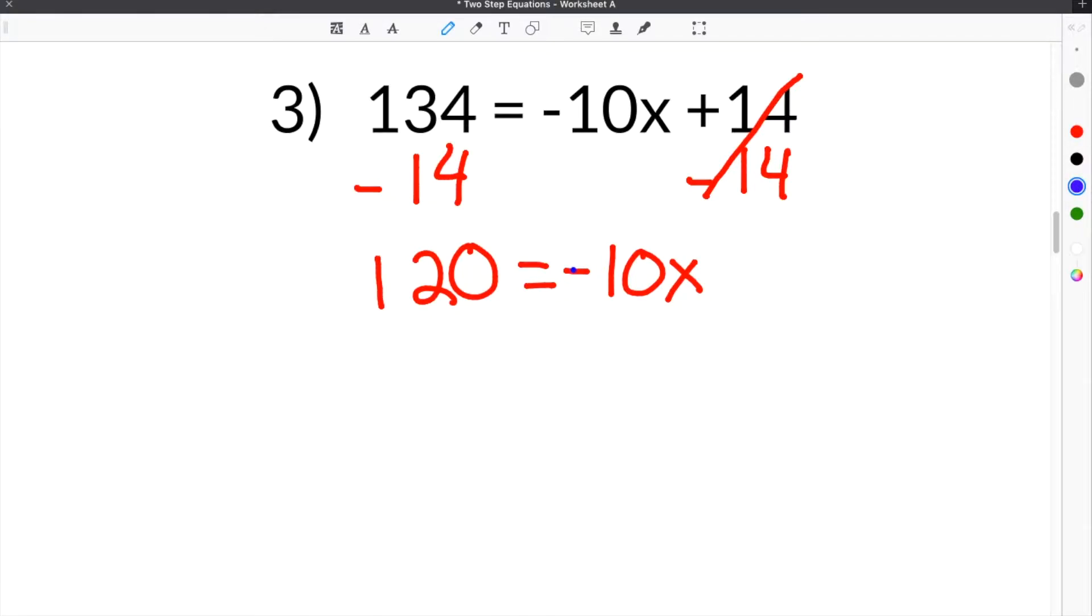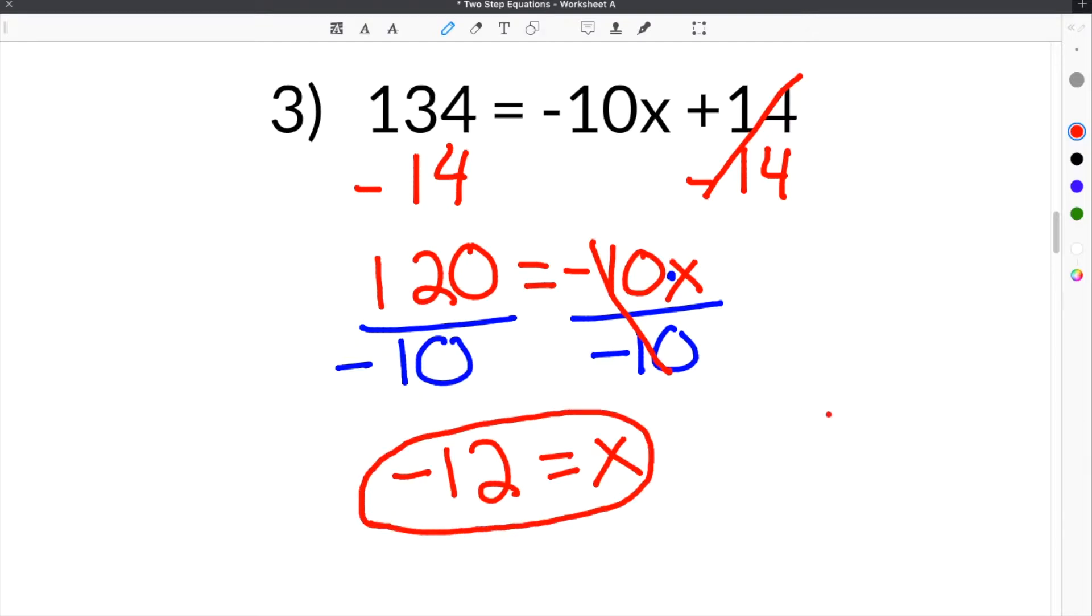This is like saying negative 10 times x, or the coefficient on x would be negative 10, so it's like negative 10 times x. You have to divide this by negative 10, because the opposite of negative 10 times something is to divide by negative 10. Whatever you do to one side, you do the other, so you also divide this side by negative 10. Over here, the negative 10s cancel, and you're left with just x. And then on this side, you do 120 divided by negative 10, which would be negative 12. So our solution is negative 12 equals x.